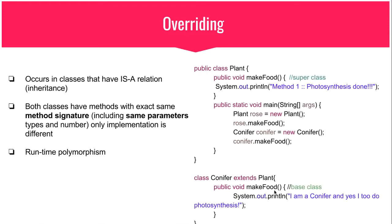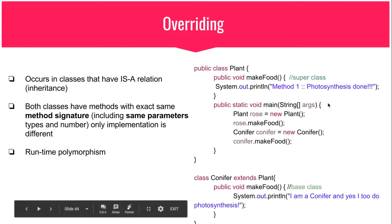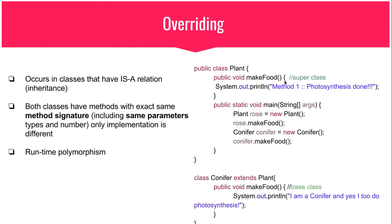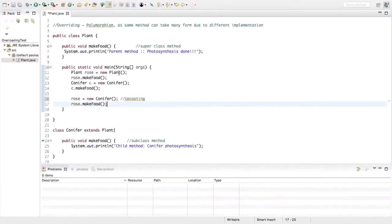On the right-hand side we have a class Plant and a class Conifer which extends Plant, so Conifer is a subclass of Plant. Both classes have the method makeFood — these two methods are exactly the same in signature, but only the implementation is different. Overriding is also known as dynamic binding or runtime polymorphism because which method to call is based on what object is referred to by the reference variable, and this can only be known at runtime.